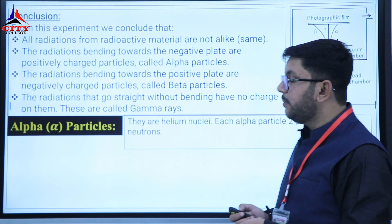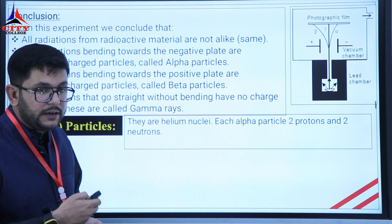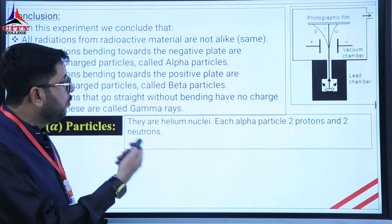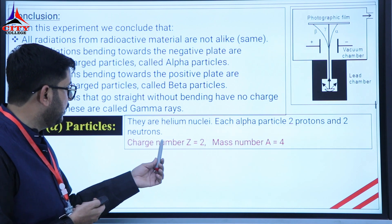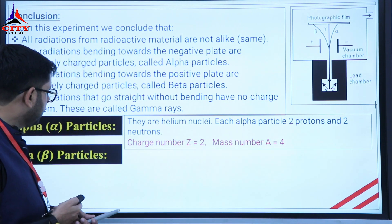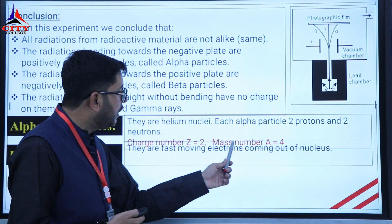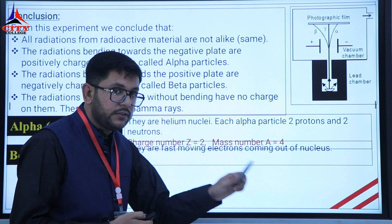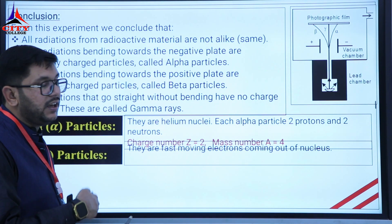Now let's talk about alpha particles. They are helium nuclei. Each alpha particle has two protons and two neutrons. Therefore, the mass number of an alpha particle is four, and the charge number is two. Regarding beta particles, they are fast-moving electrons coming out of the nucleus. This is an important point: beta particles are emitted from within the nucleus.